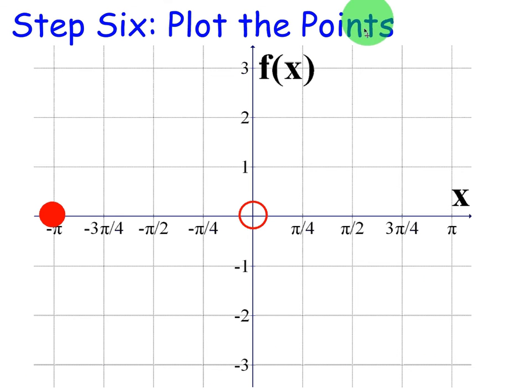Step 6, plot the points. So at negative pi, it's going to be a solid point, negative pi, 0. At 0, 0, it's going to be a hole.